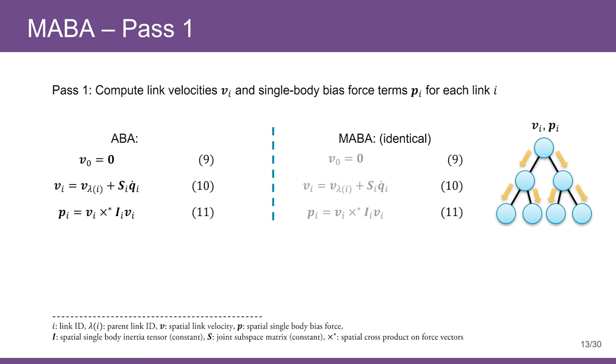The first pass of MABA is identical to that of ABA. In this pass, we compute auxiliaries including link velocities and bias forces including centrifugal, Coriolis, and external forces. Velocities are accumulated from root to leaves. Once velocities are computed, various forces for each individual link can be computed by cross products. Note that we are working with spatial quantities, which are 6D vectors including both translational and rotational motion. Detailed explanations of spatial quantities can be found in Featherstone's books and tutorials.